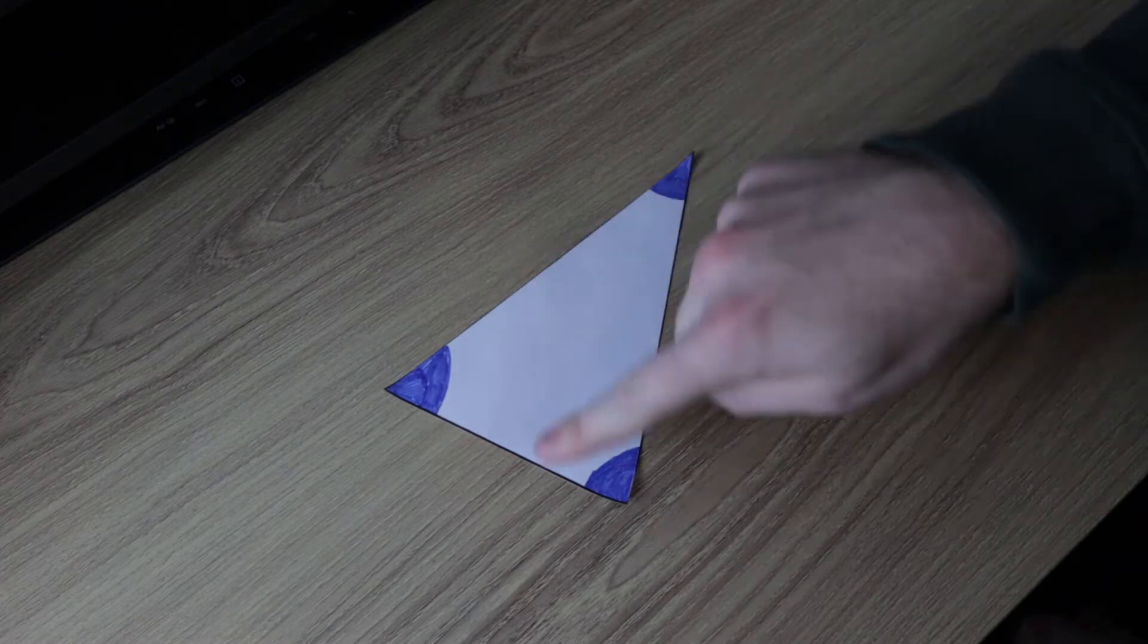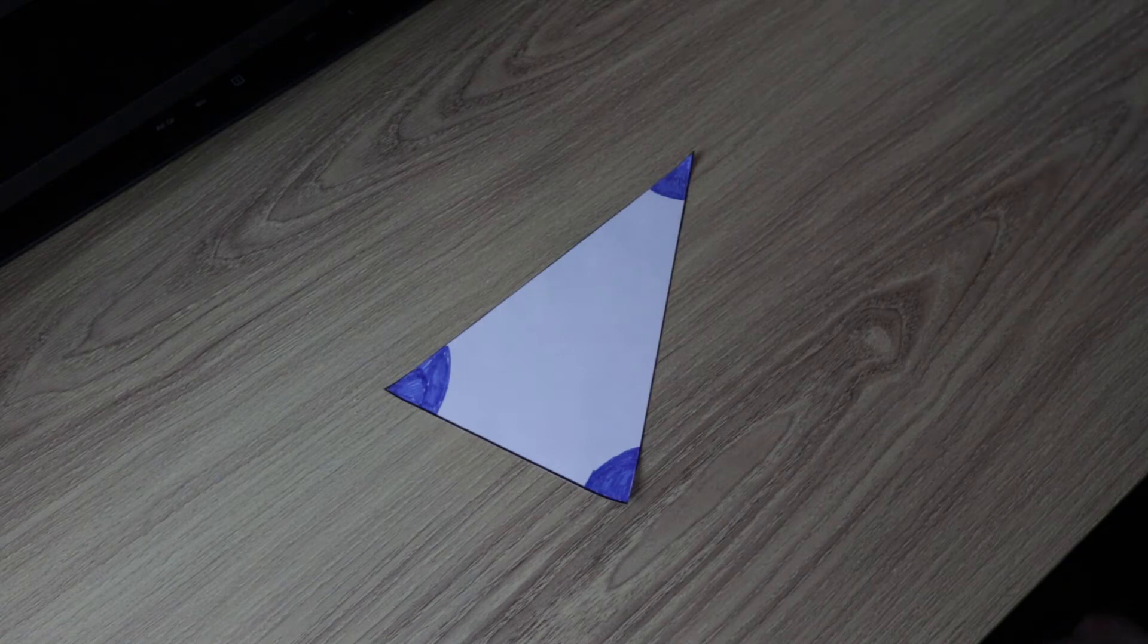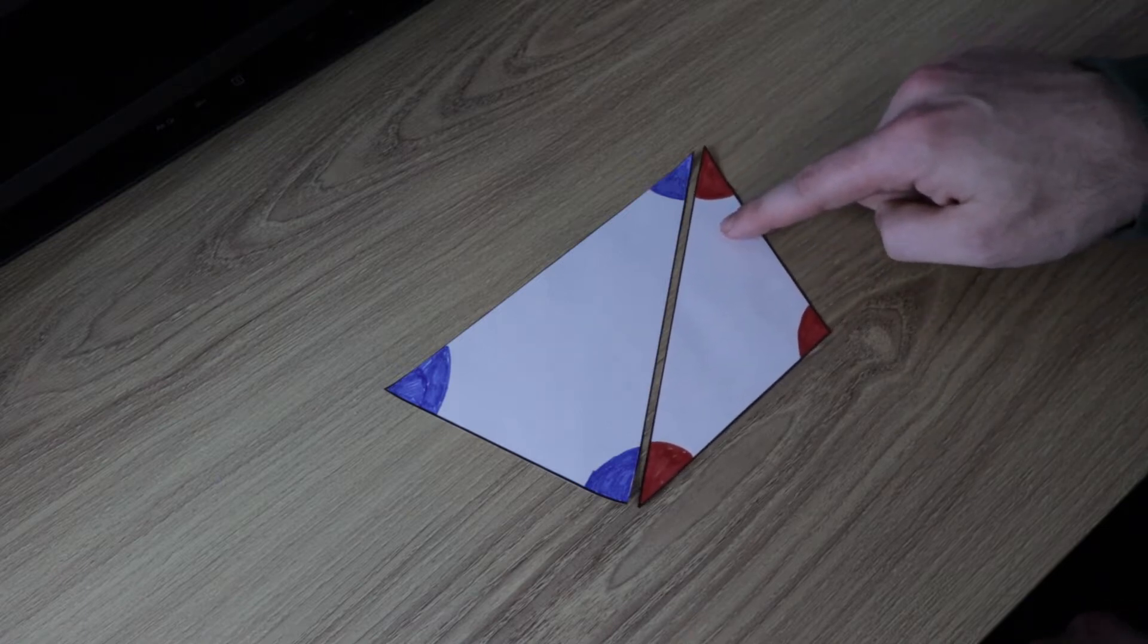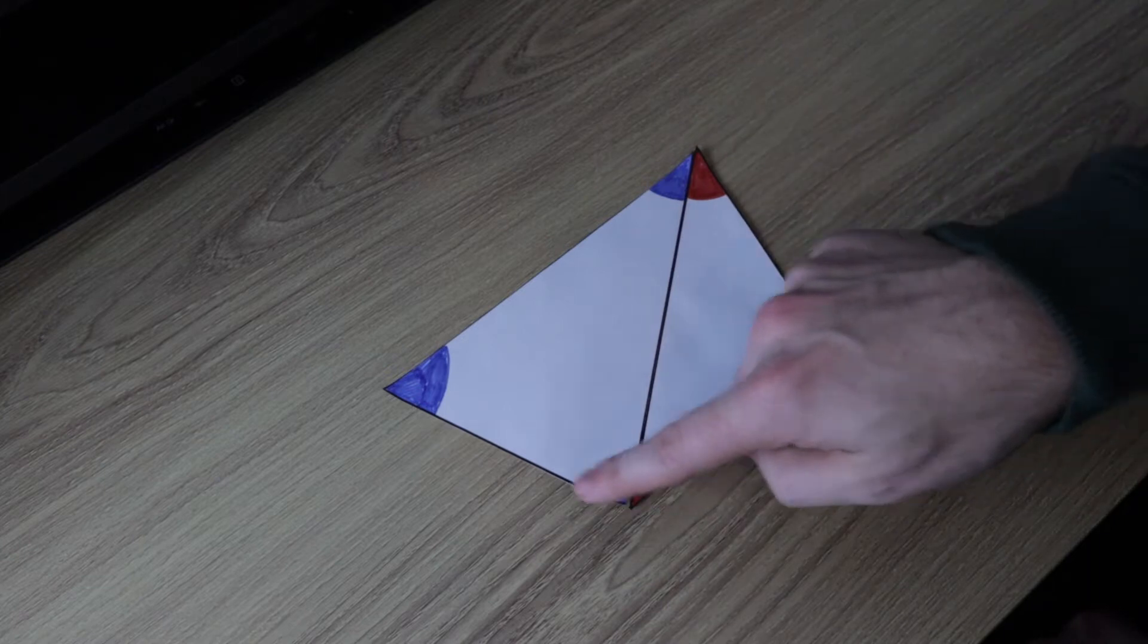Our job then is to turn this triangle into a four-sided shape. Now how can we do that? Well we can use another triangle. So we bring this red one in and we match up the sides here, we've created a four-sided shape.